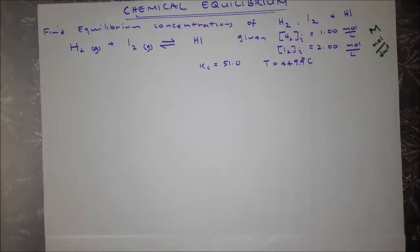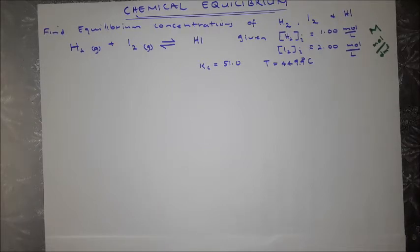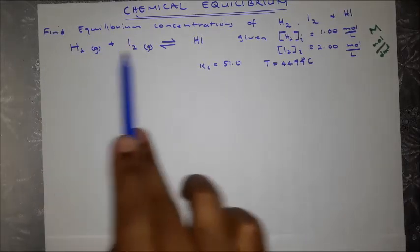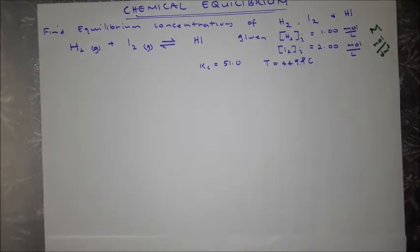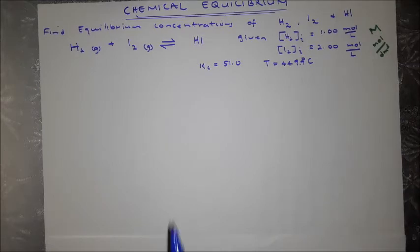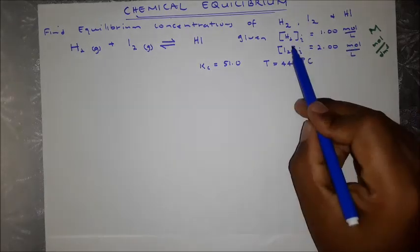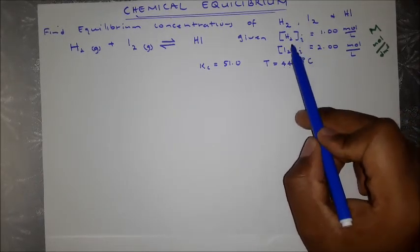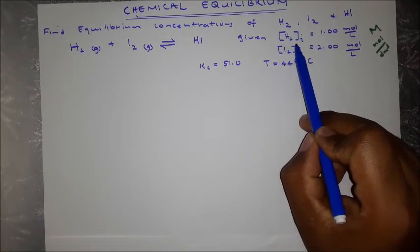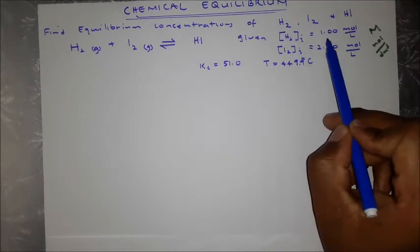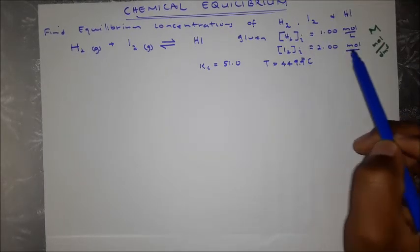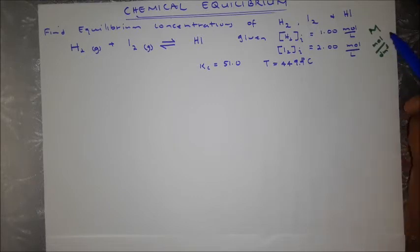Welcome to Academic Coordinates. This is a third example in chemical equilibrium, and it's slightly different from the ones we've done already. We are asked to find the equilibrium concentrations of hydrogen, iodine, and hydrogen iodide. We're given a reaction and the initial concentrations: hydrogen is 1.00 mol/L and iodine is 2.00 mol/L.